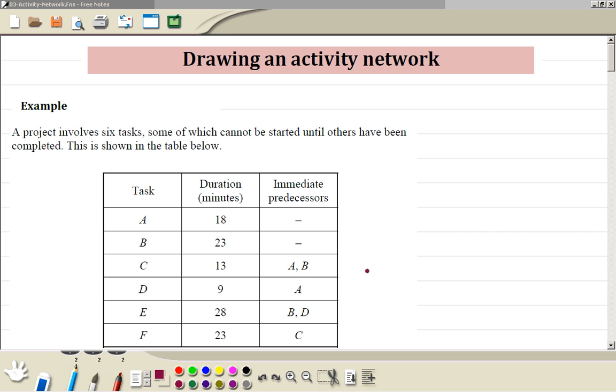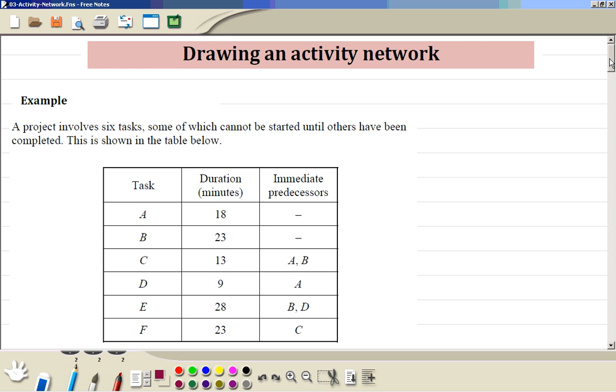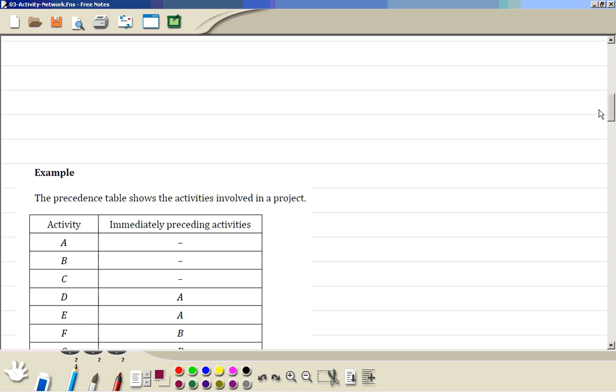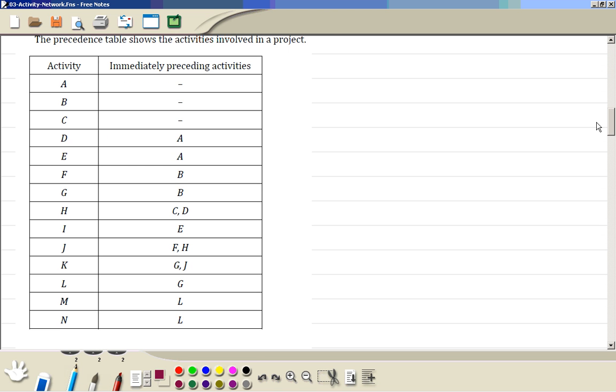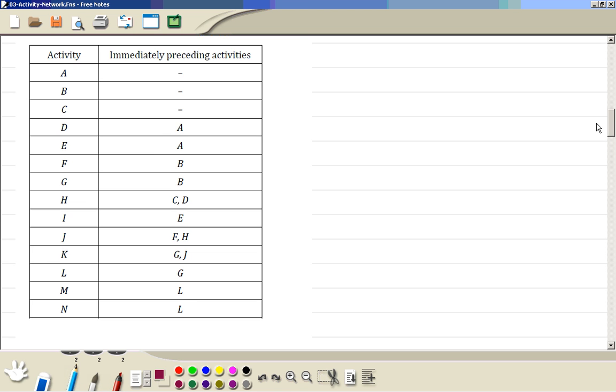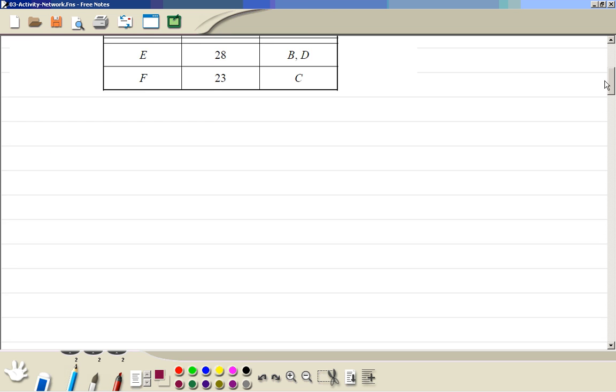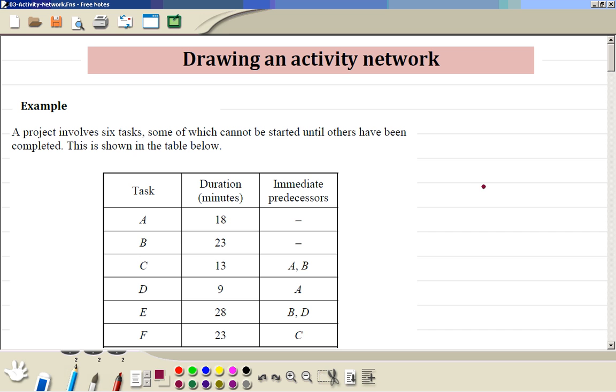Drawing an activity network. You can try this example yourself when you've done it, then check the solutions. Also there is another example here. Let's do this example.